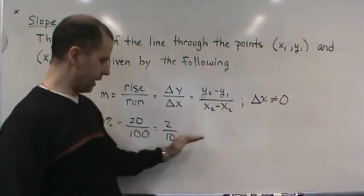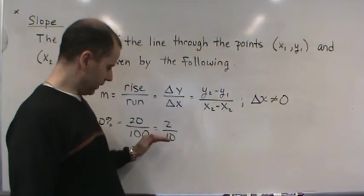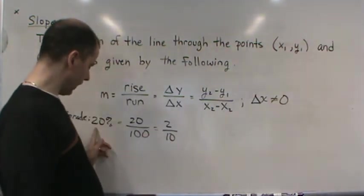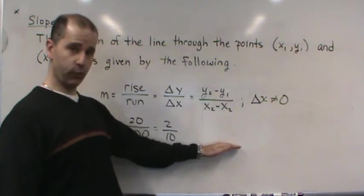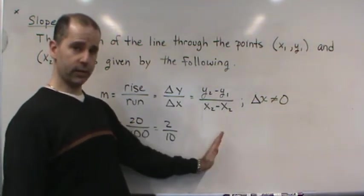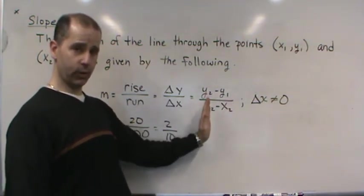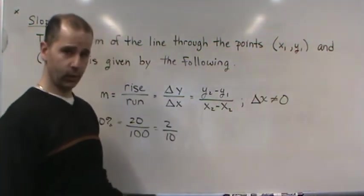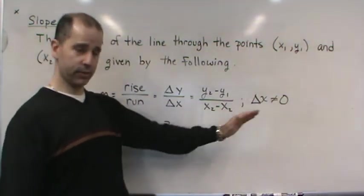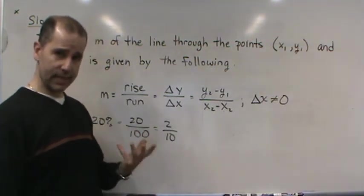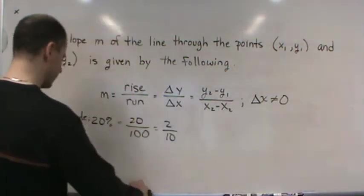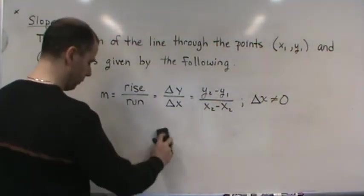So if it has a grade of twenty percent, we're saying that for every ten feet you move horizontally, the highway is going up vertically two feet. Or it could be miles - every ten miles it's moving up two miles. So that gives you an idea of the steepness of the highway. That's another use of slope.